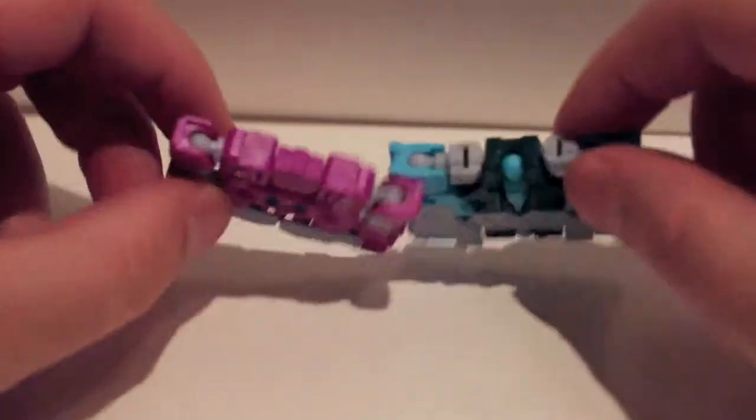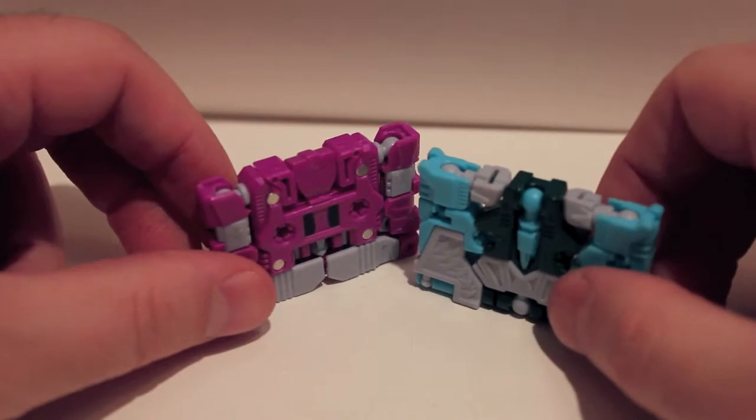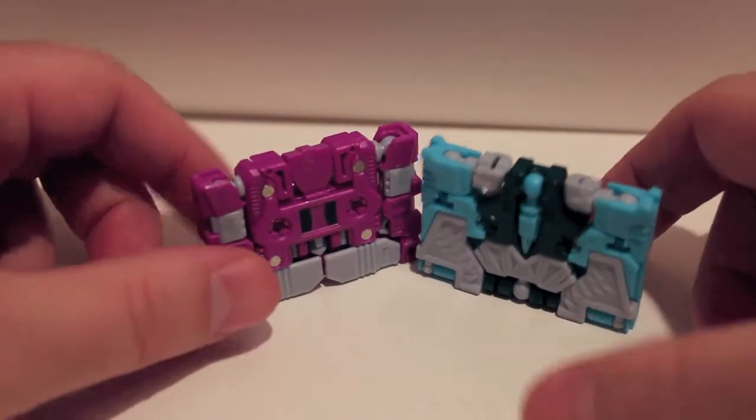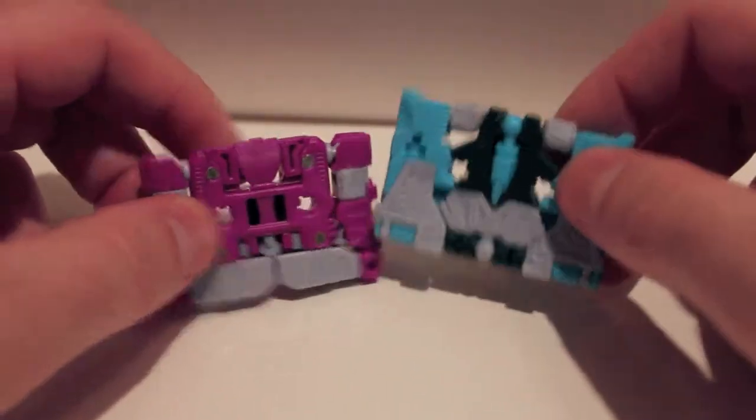These are the Decepticon combining cassettes. They were cassettes that combined in G1. There was an Autobot cassette set and a Decepticon one. These are the Decepticon ones. They are doing the Autobot one, which is very cool.